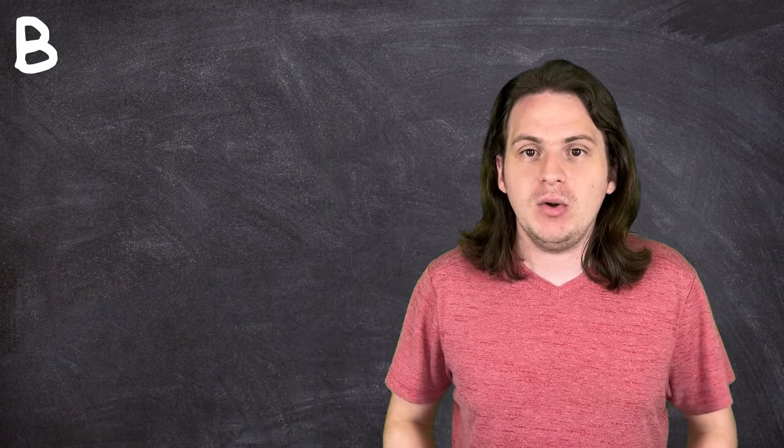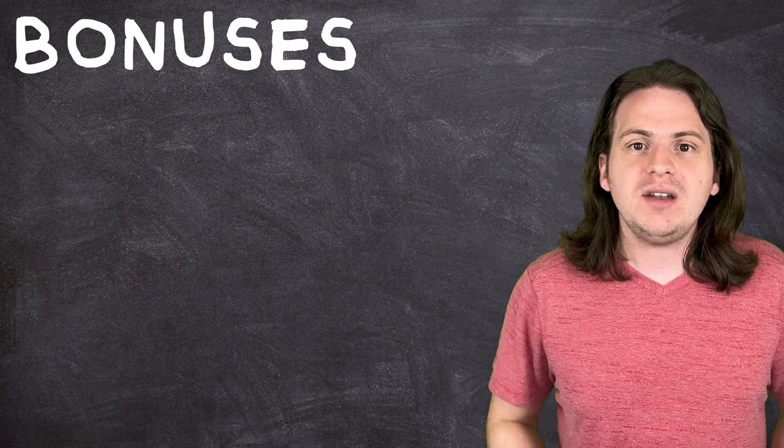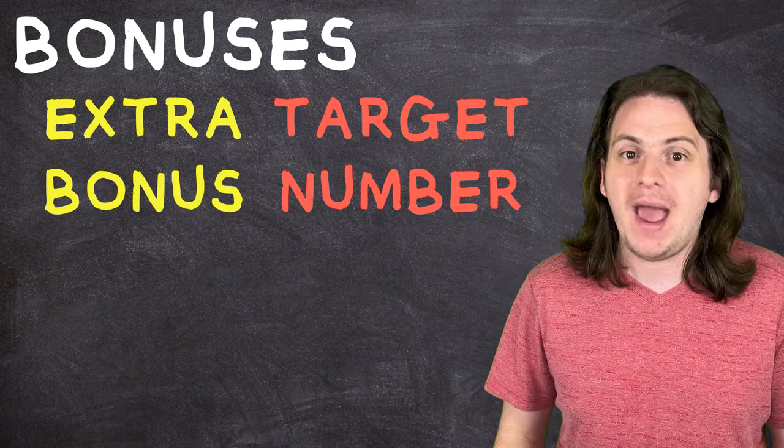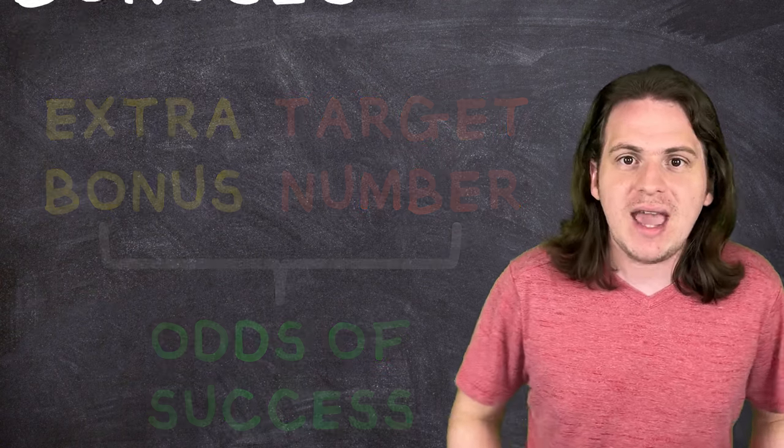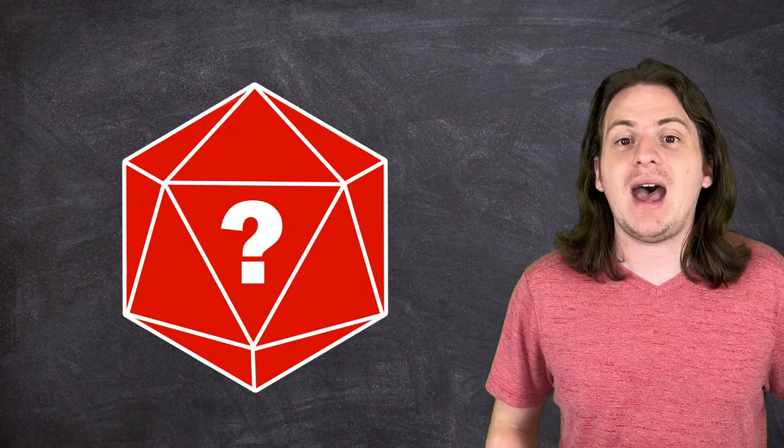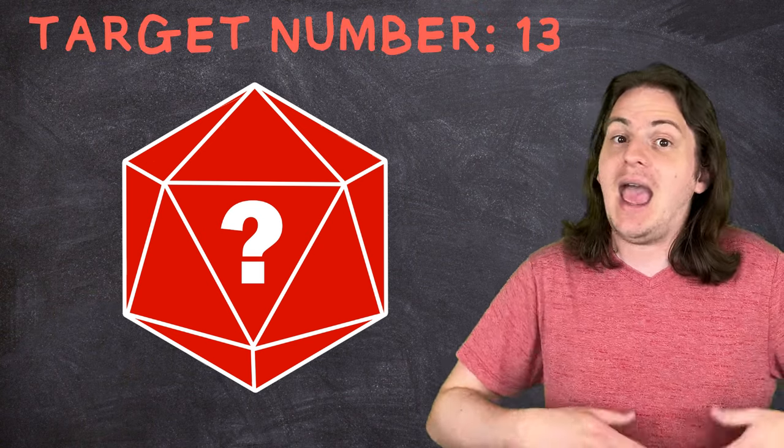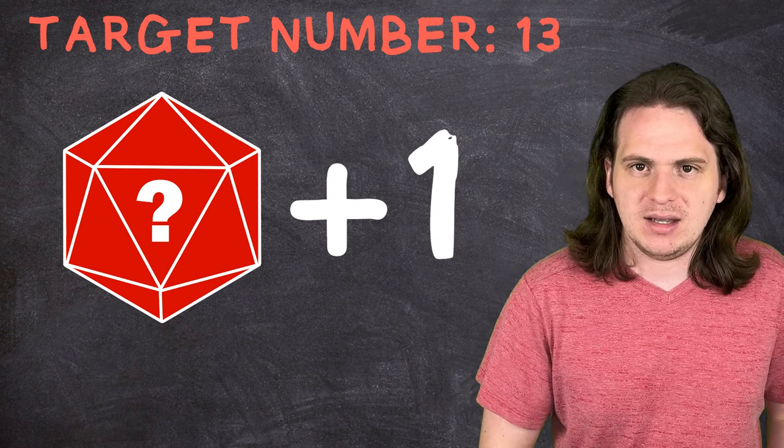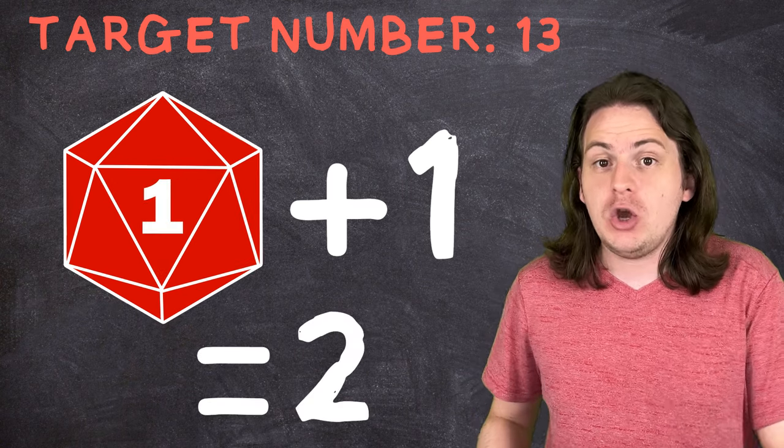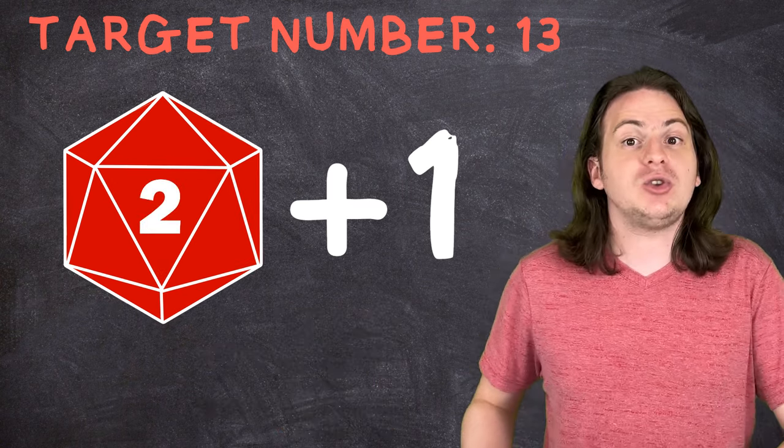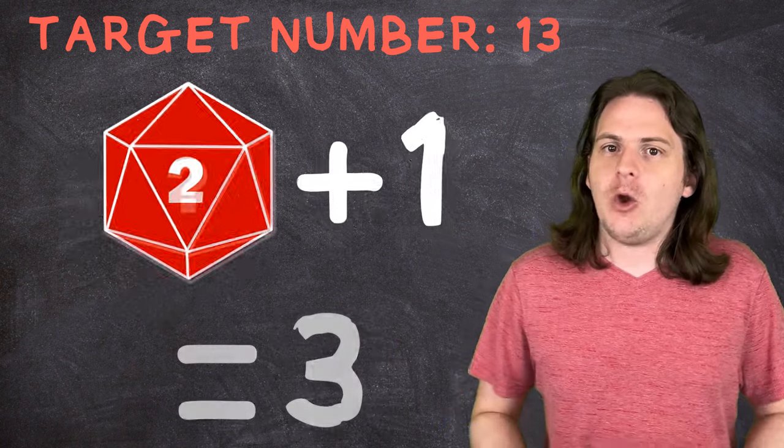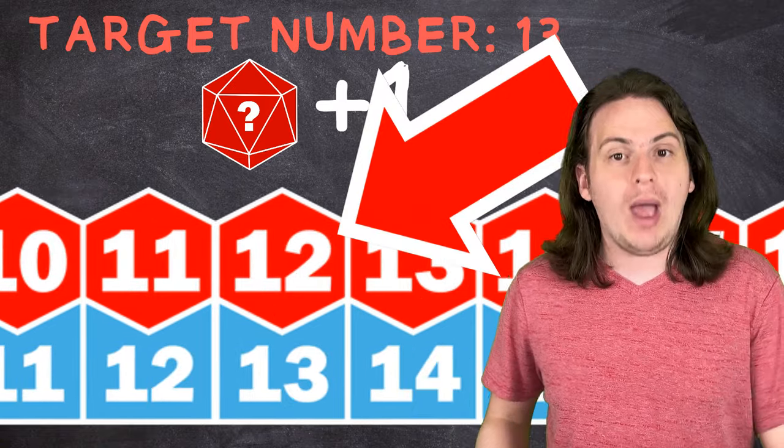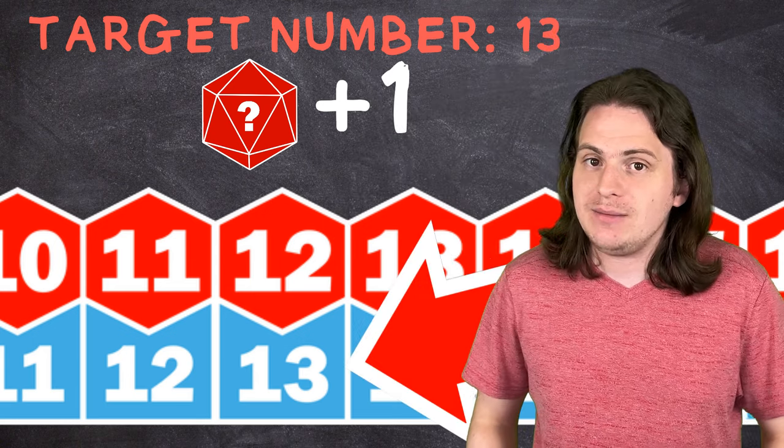Then let's start with the flat bonuses, because they're a bit easier. What we want to do is find an equation where we can plug in our extra bonus and our target number, and get the odds of success. Let's look at an example. Say you're rolling a 20-sided die, you're trying to hit a 13, and you add 1 to the roll. And remember, that's 1 more than what you would normally get. Well, if you roll a 1, that's a total of 2, that's a fail. If you roll a 2, that's a total of 3, that's still a fail. If you keep going like this, you'll see that the lowest number you could roll to succeed is a 12.